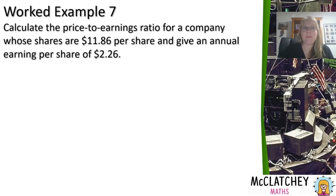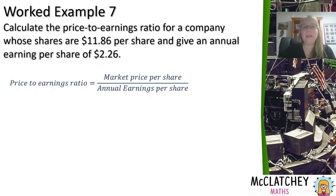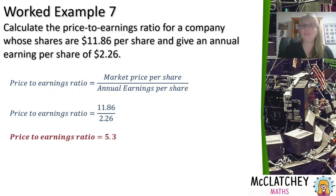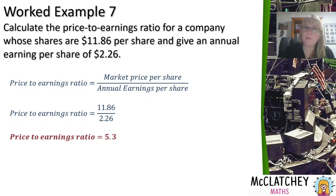In worked example seven, calculate the price to earnings ratio for a company whose shares are $11.86 per share with an annual earnings per share of $2.26. We can substitute directly into the formula and find the price to earnings ratio is 5.3. Because it's a ratio there are no units — don't put dollar signs or percentages on this one. If you get an answer with many decimal places, round to about two decimal places.